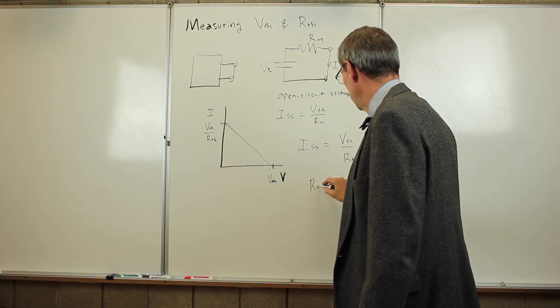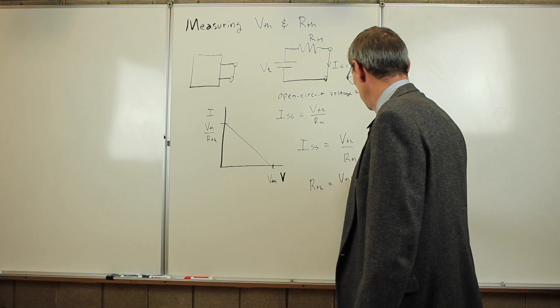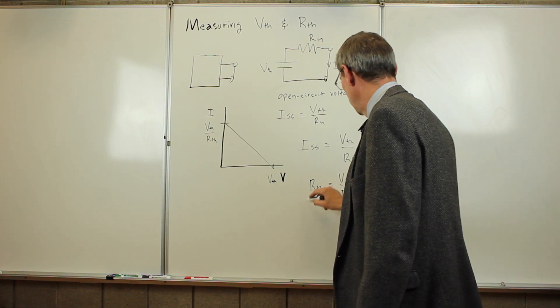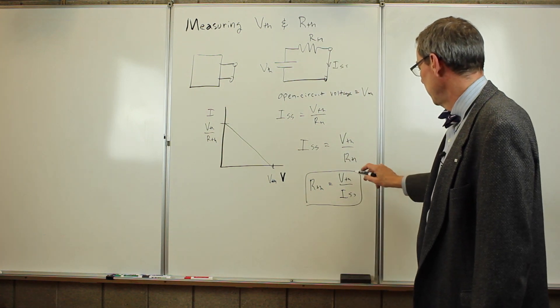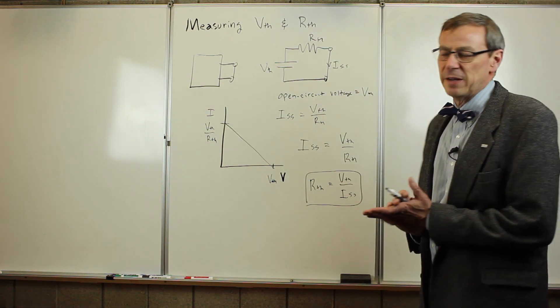We know V Thevenin and we know V Thevenin over R Thevenin. So the short circuit that we measured is V Thevenin over R Thevenin, or R Thevenin is V Thevenin over I short circuit. So we measure the open circuit voltage and the short circuit current. We get the Thevenin voltage and the Thevenin resistance.